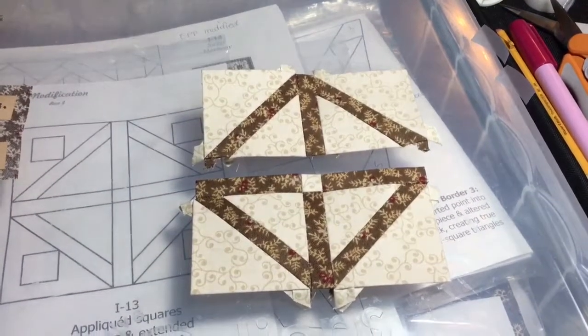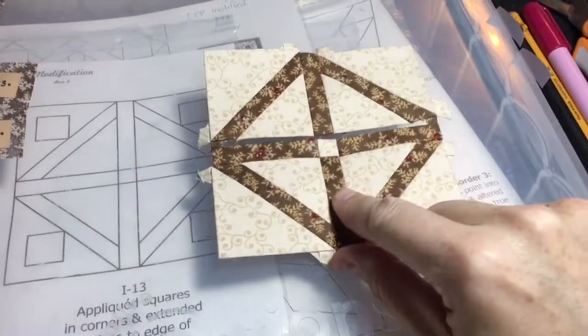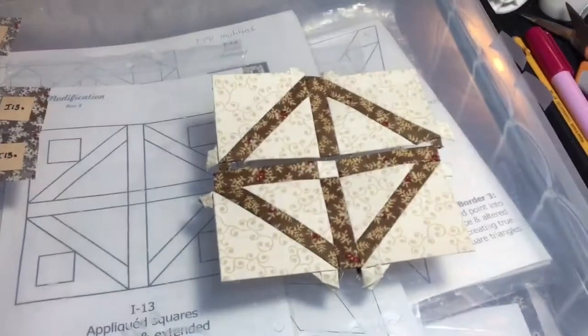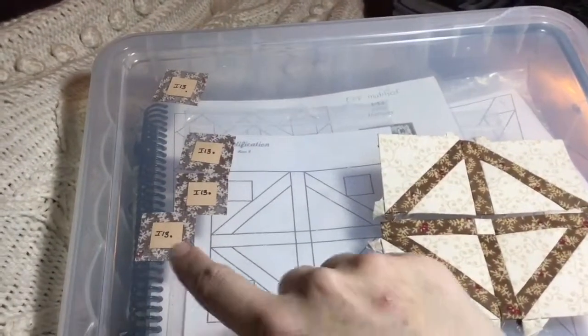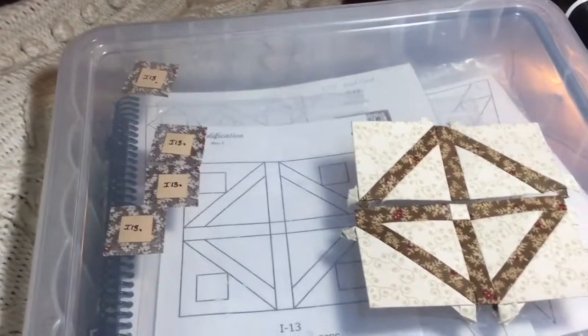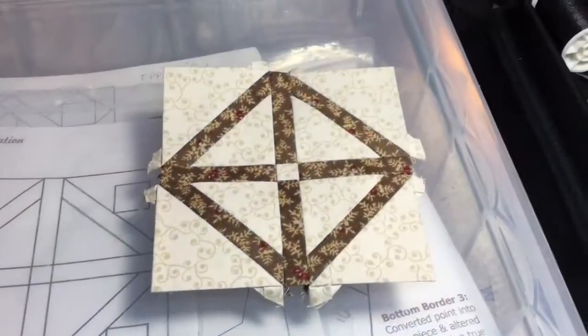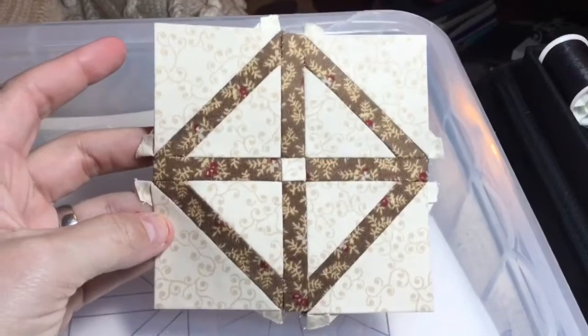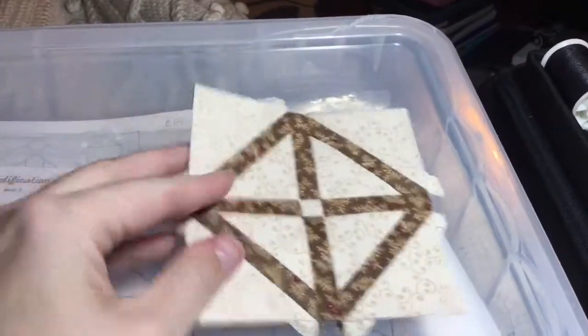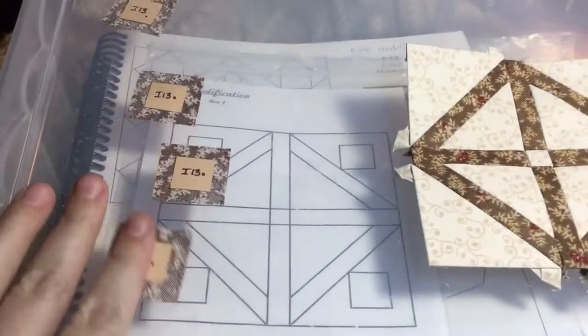Now my top row is done and I will complete the block with this one more seam completion. And then I can worry about my squares. Now I have my base block all completed. Now it's just a matter of basting my squares.